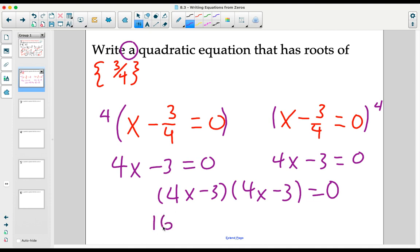Multiplying this out to create our quadratic, we get 16x² minus 24x plus 9 equals zero. And again, what we saw in the last example holds true here.